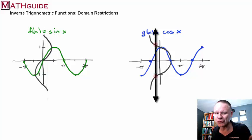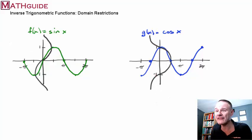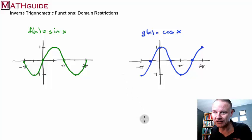So, what do we have to do? We have to restrict the domains of the original functions. So, that means what we're going to have to do is grab portions of the curve so that when we do reflect them over the diagonal line, we will get functions.